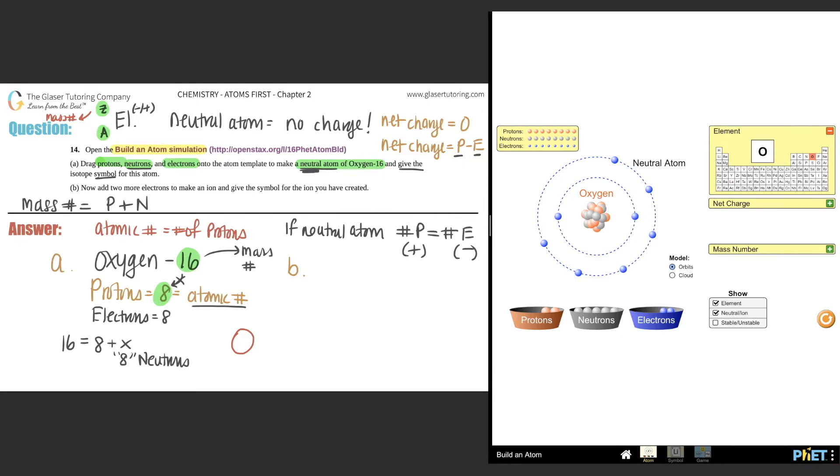The mass number we figured out was 16, because that's what they told us, so that goes up top here. The atomic number for oxygen will always be 8, because that's the number of protons. The neutral charge, or the net charge, was protons minus electrons—it was zero. In this case, we don't have to write a zero here. You can just write nothing, and it is assumed that there is no charge. So this would be the full answer for part A.